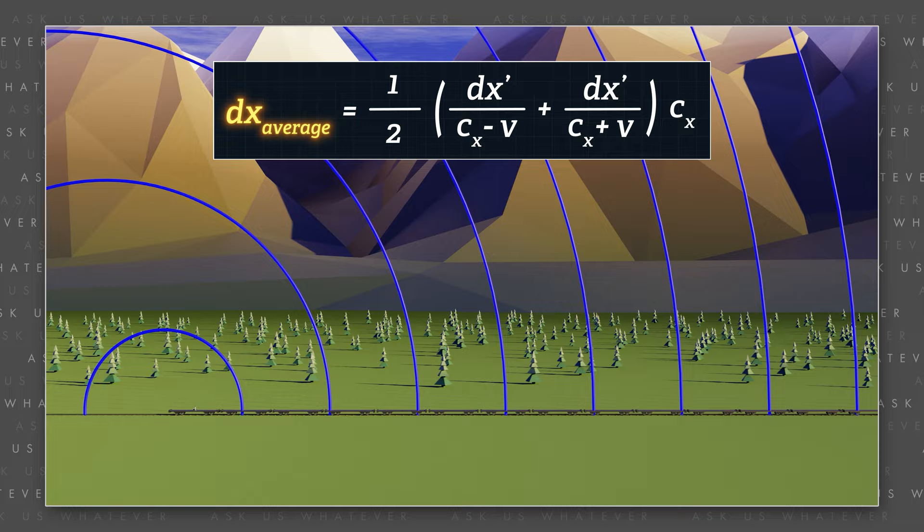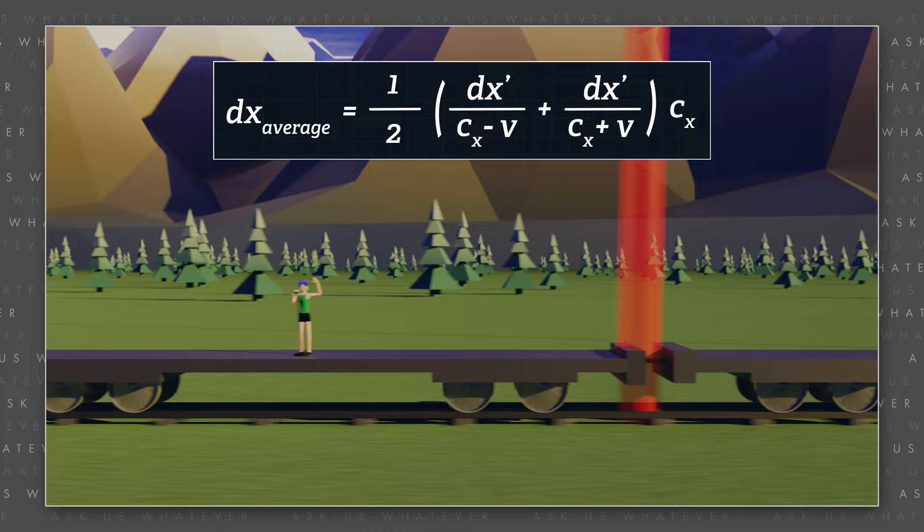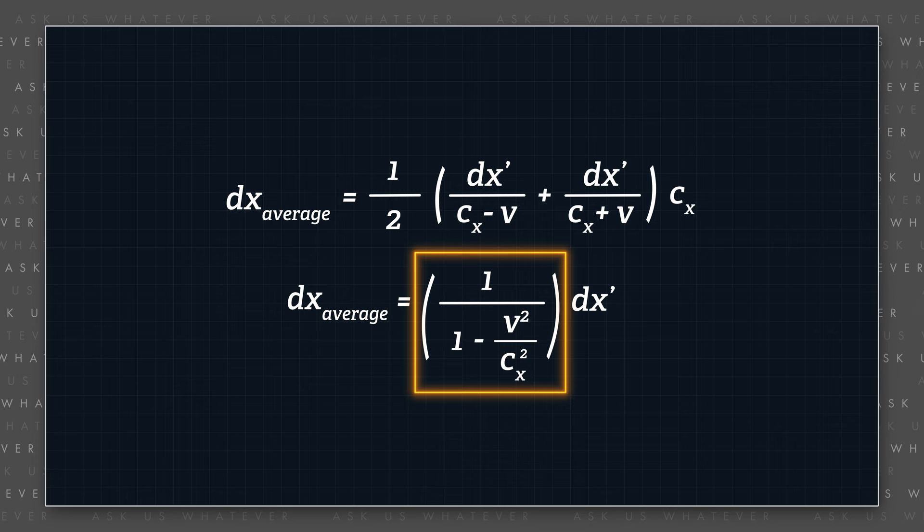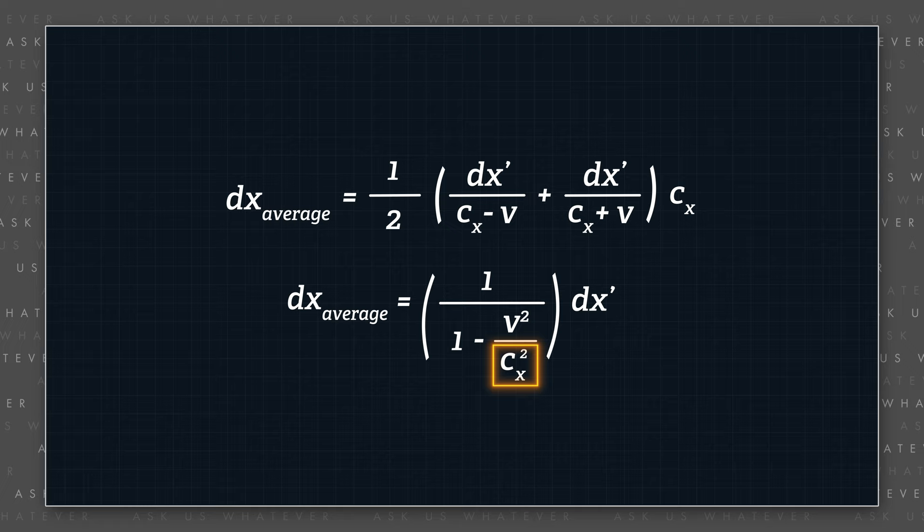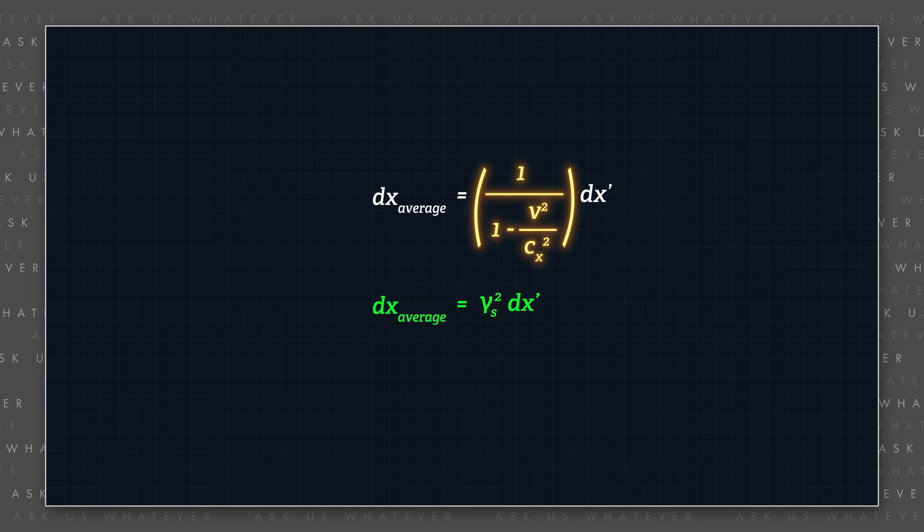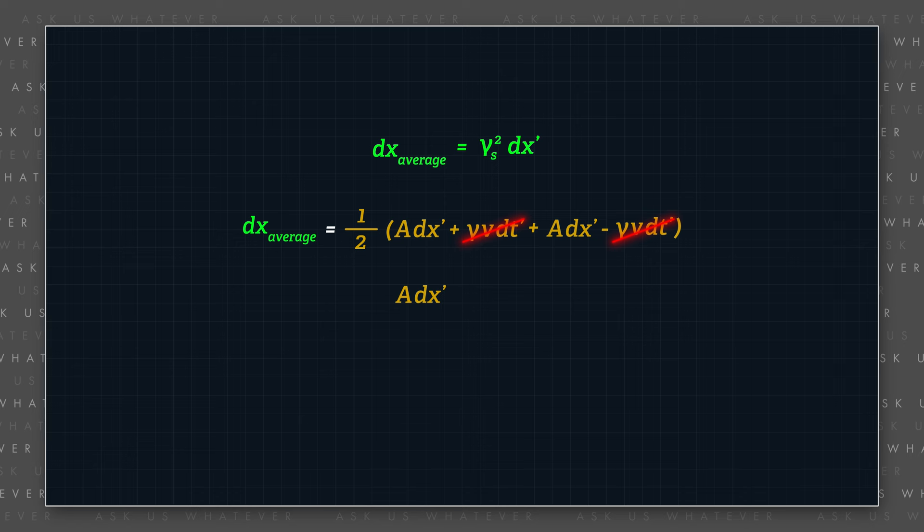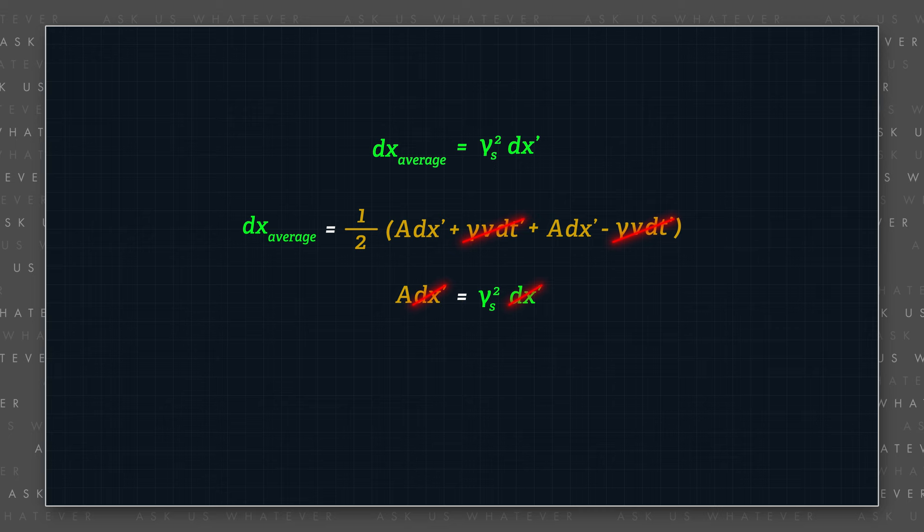Recall from episodes 2 and 6 that dx average can be obtained for a longitudinal signal when that signal travels to the front of a non-contracting moving train car and bounces back to the rear of the train car using the formula dx prime multiplied by the square of a Lorentz-type gamma factor, where the speed of longitudinal signal is represented by the symbol c sub x, which is a symbol we use so that we can retain the possibility that longitudinal light speed might not simply be speed c. As we described in episode 6, we use the symbol gamma s squared to represent this Lorentz-type gamma factor squared. And since dx average is equal to one-half the sum of the forward and reverse distance transformations, then capital A times dx prime equals gamma s squared times dx prime. So we can logically conclude that capital A equals gamma s squared.